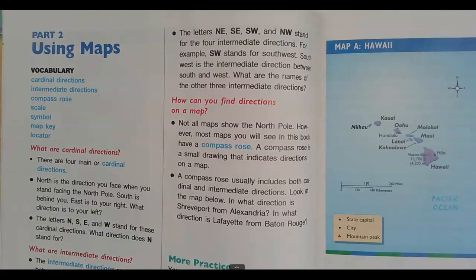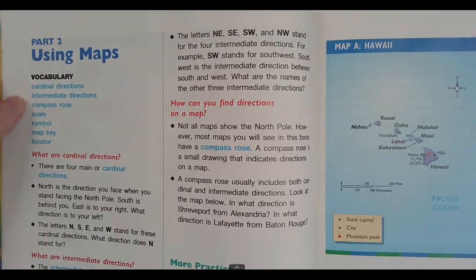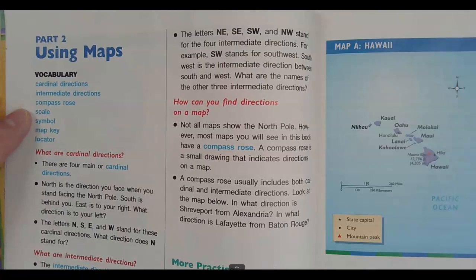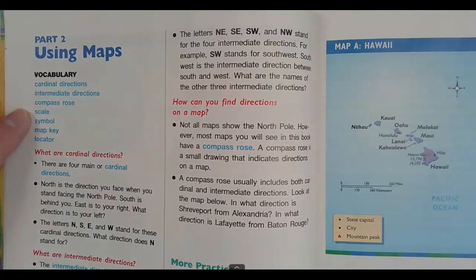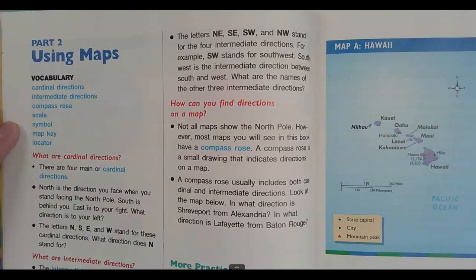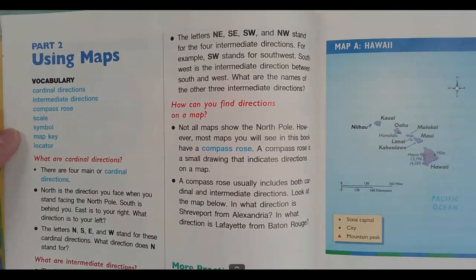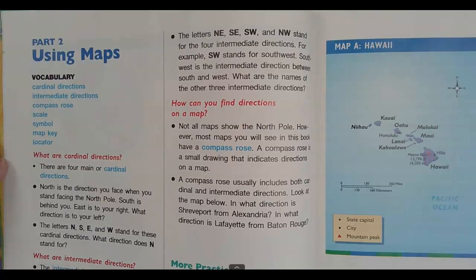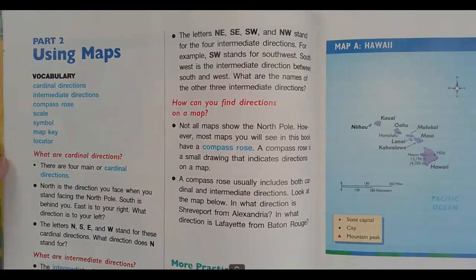Vocabulary: cardinal directions, intermediate directions, compass rose, scale, symbol, map key, and locator. What are cardinal directions? Those are the four main or cardinal directions — north, south, east, and west.